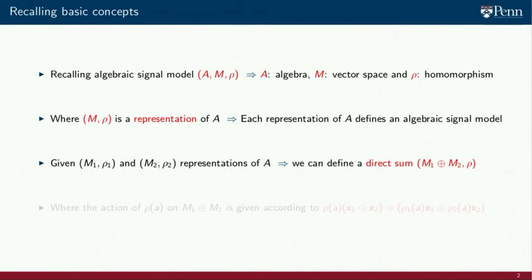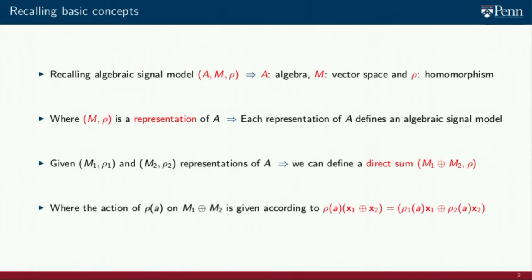We point out that given two representations M sub 1, Rho sub 1 and M sub 2, Rho sub 2, it is possible to define a direct sum as M sub 1 ⊕ M sub 2, Rho. The vector space in the sum representation is the direct sum of the spaces M sub 1 and M sub 2, and there is a homomorphism Rho. The action of Rho of A on X sub 1 ⊕ X sub 2 equals the direct sum of the action of Rho sub 1 of A on X sub 1 and Rho sub 2 of A on X sub 2.